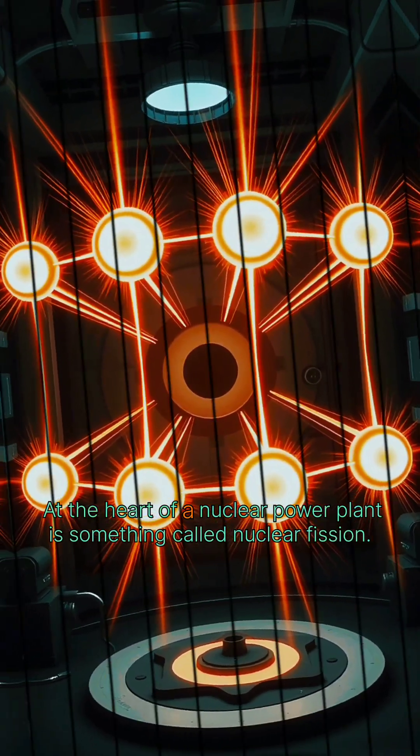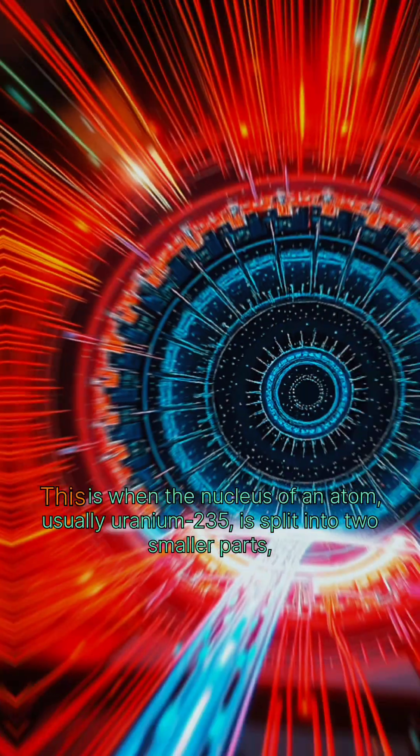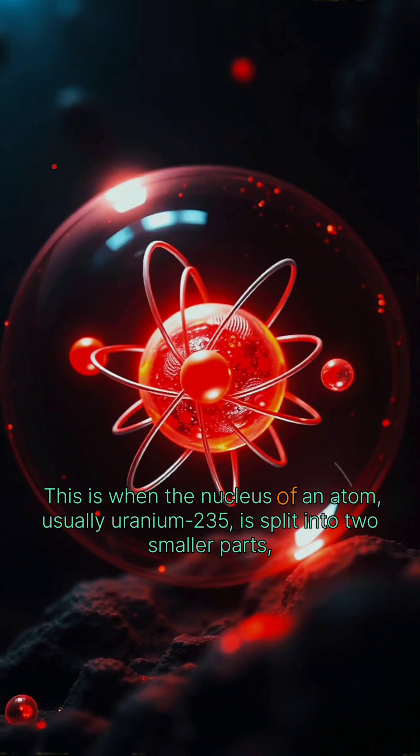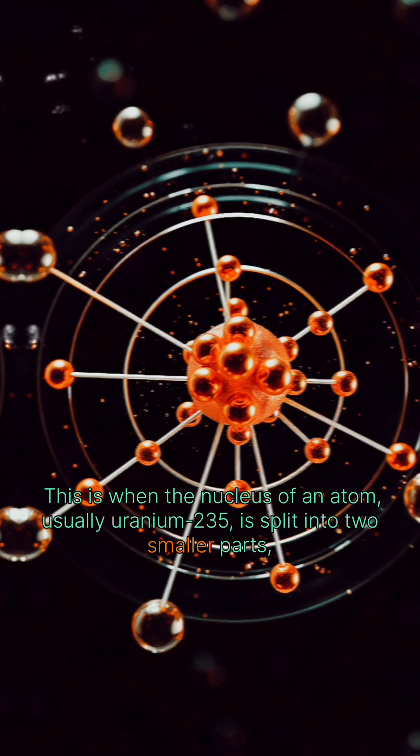At the heart of a nuclear power plant is something called nuclear fission. This is when the nucleus of an atom, usually uranium-235, is split into two smaller parts.